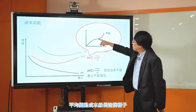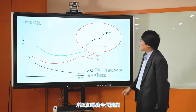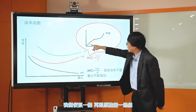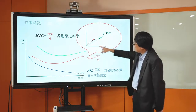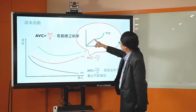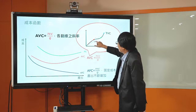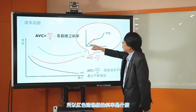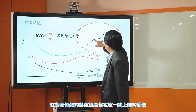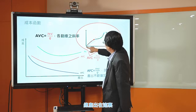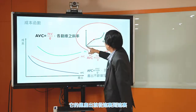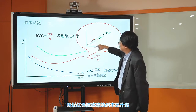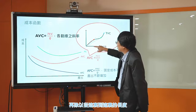平均变动成本等于总变动成本除以产量。我们已经知道总变动成本的图大概长这个样子。如果随便在总变动成本线上抓一点，再跟原点画一条割线，这条割线的斜率就是总变动成本除以产出Q，刚好就等于那一点的平均变动成本。所以总变动成本图形上某一点的平均变动成本，就是那一点与原点连线的斜率。